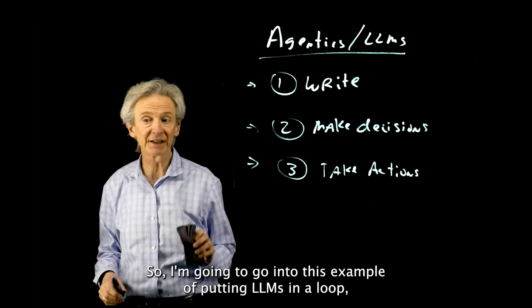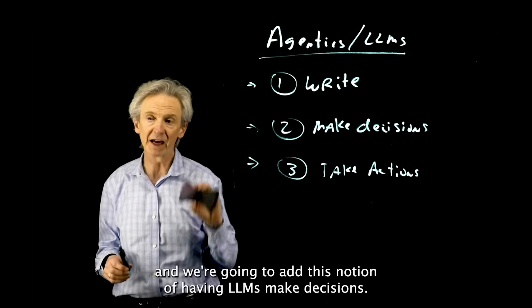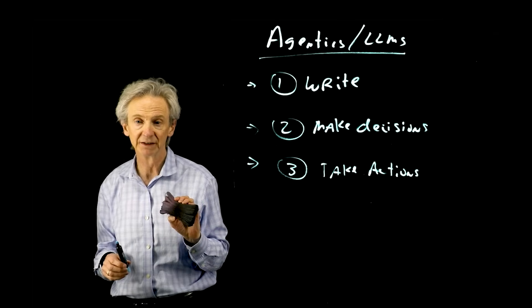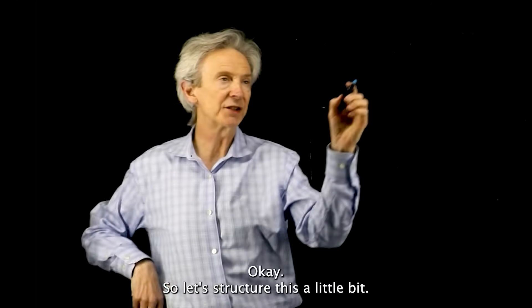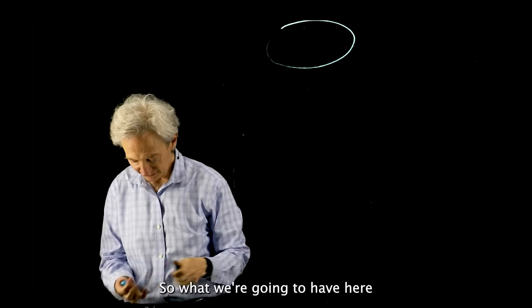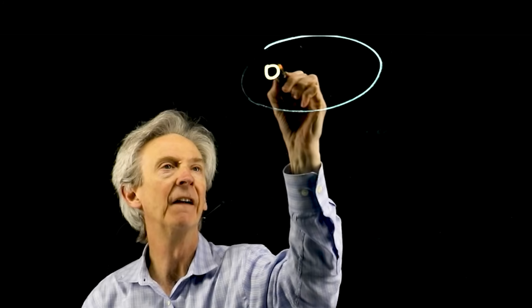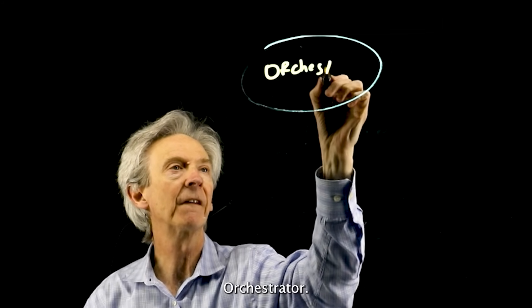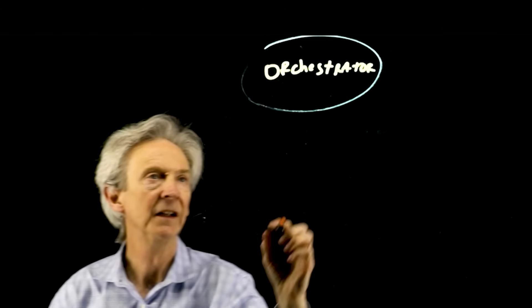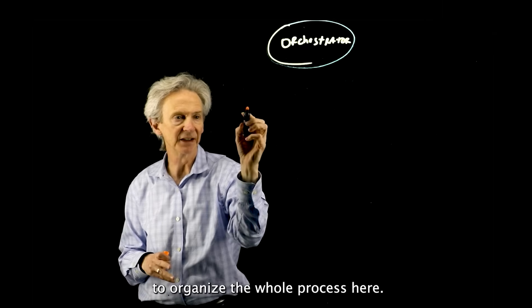I'm going to go into this example of putting LLMs in a loop and we're going to add this notion of having LLMs make decisions. Let's structure this a little bit. We're going to have here on top what I'm calling an orchestrator. This particular agent is going to organize the whole process here.